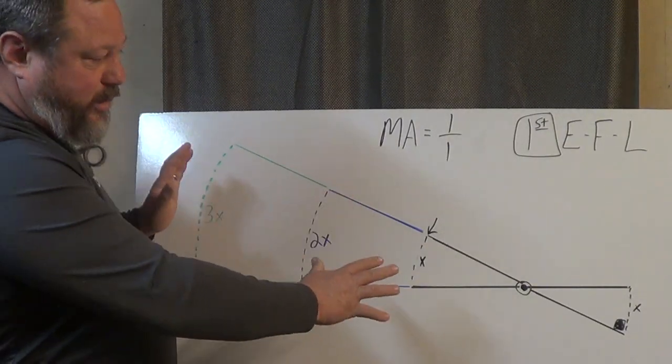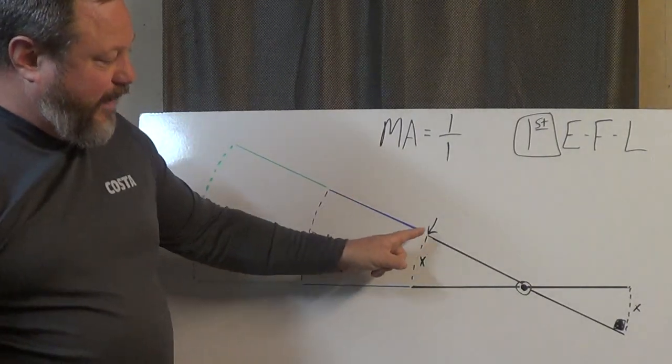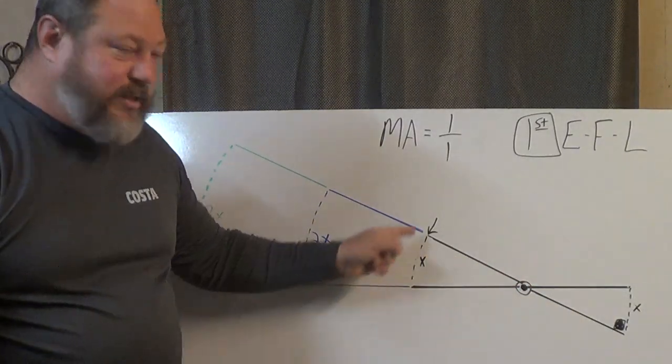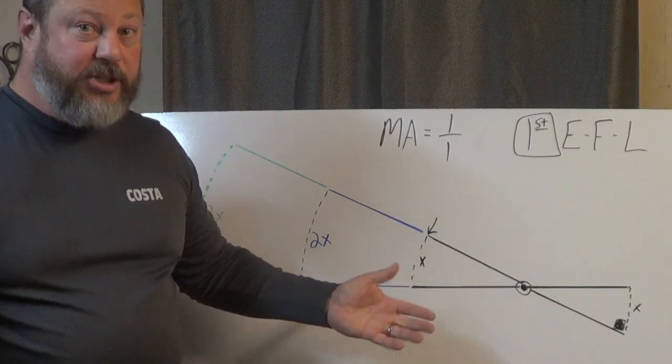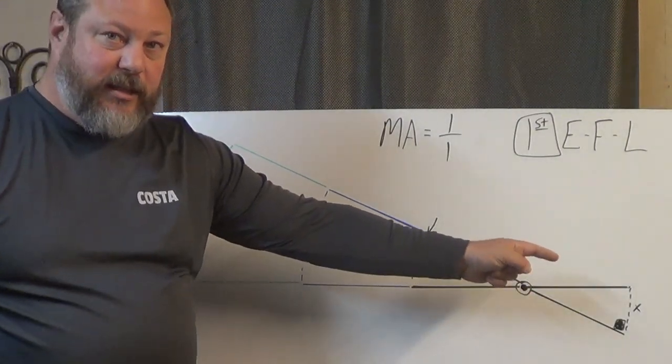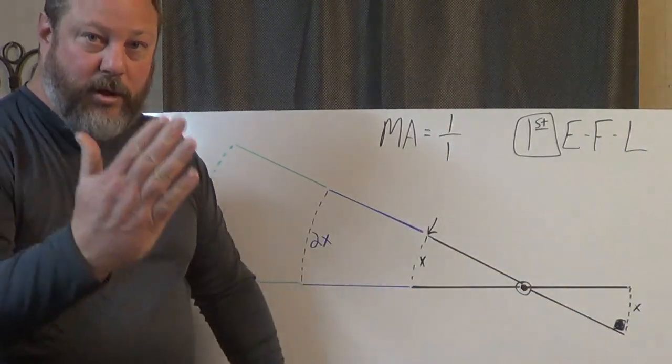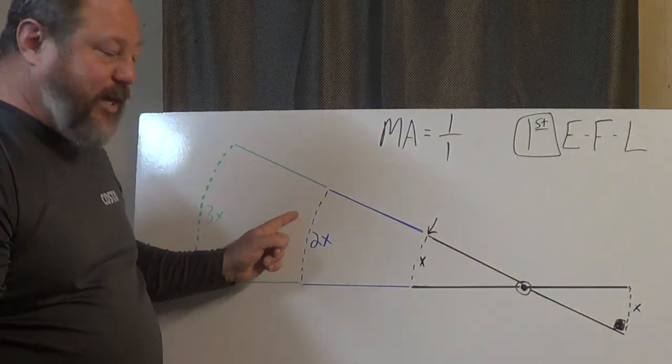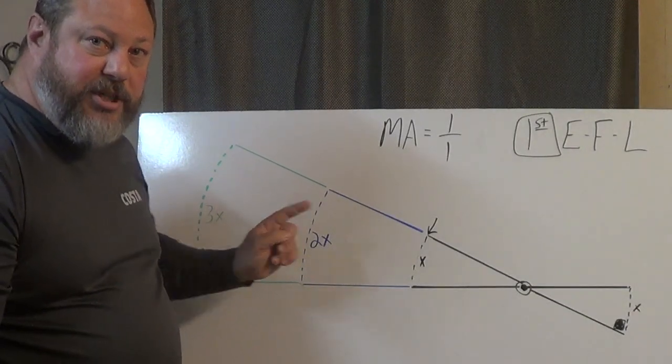That is literally what is going on here. So if I have a one-to-one leverage ratio, the distance I rotate my effort on the shank of the bit is the exact same distance that the purchase of the bit or the port will rotate upward.